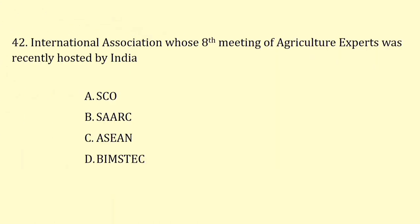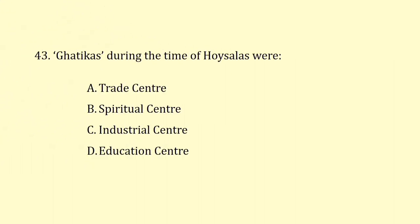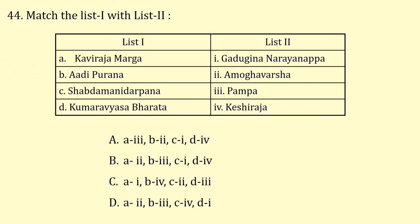The international association whose eighth meeting of agriculture experts was recently hosted by India is Beamstech. Gattika's during the time of Hoysalas were education centers. Match list 1 with list 2: Kaviraja Marga was written by Amogavarsha, Adipurana by Pampa, Shabda Mani Darpana by K.C. Raj, and Kumara Vyasa Bharata by Gadugina Narayanappa. The correct answer is option D.